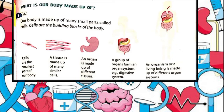Our body is made up of many small parts called cells. A cell is defined as the smallest and basic unit of life, responsible for all of life's processes. Cells are the structural, functional and biological unit of all living beings.